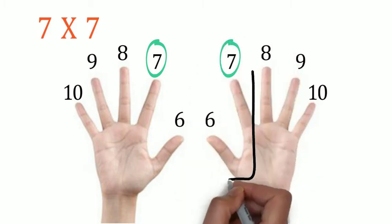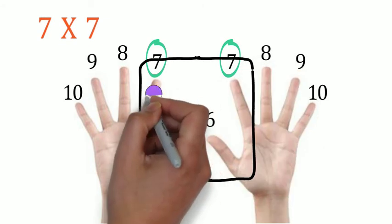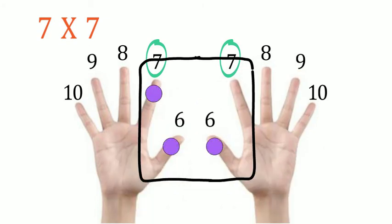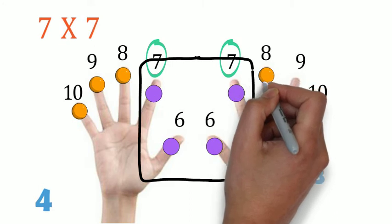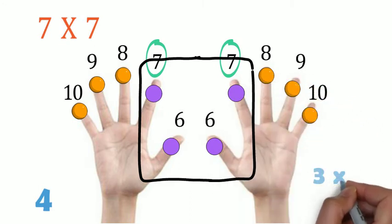Now let's see how many fingers are there from number seven and below. On the left there are two, and on the right also two, so the total is four. Next we look at the fingers to the left of the seven. There are three, and on the right there are also three. So we multiply the two numbers: three times three, and we get nine.